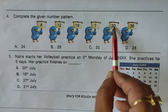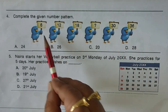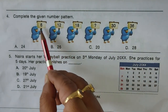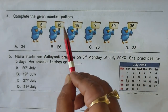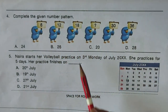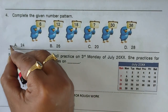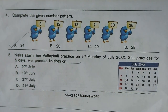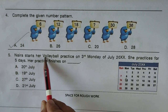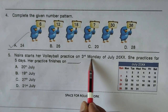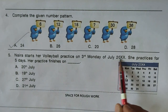Next question: complete the given pattern — 6, 12, 18, ?, 30, 36. The pattern increases by 6 each time: 6 plus 6 is 12, 12 plus 6 is 18, 18 plus 6 is 24. So option A, 24, is the right answer.